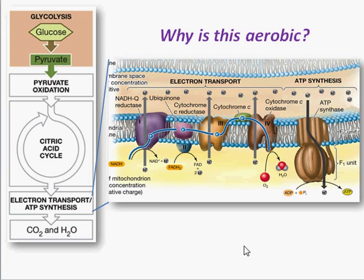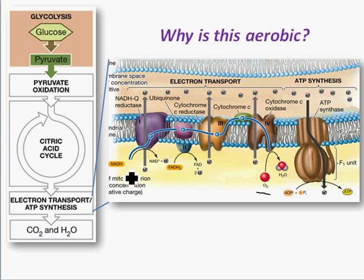Here's that electron transport chain, and here's oxygen. Oxygen is the last electron acceptor, so as the electrons flow through the chain, they end up at oxygen and it becomes water. The electron carriers from the previous reactions show up here, drop off their electrons. NADH drops off its electron and becomes NAD+. FADH2 drops off its electron and becomes FAD. So it regenerates these electron acceptors.